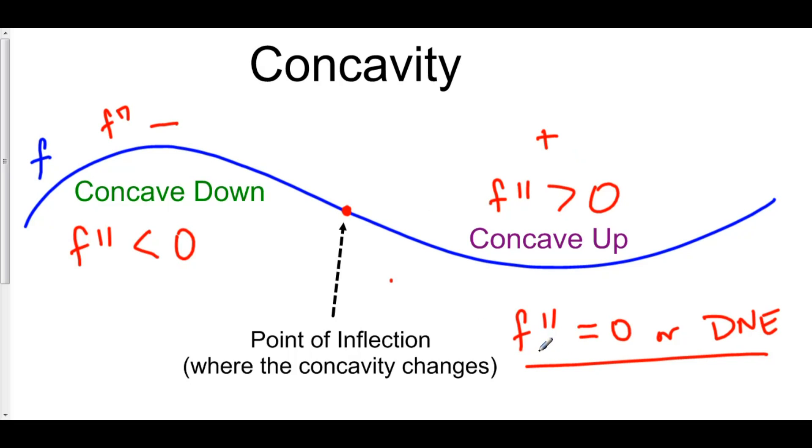We are going to find the second derivative, set that equal to zero or find out where it does not exist. And that would give us possible points of inflection. But to determine whether they actually are points of inflection, we have to figure out whether the concavity actually changes at those points.